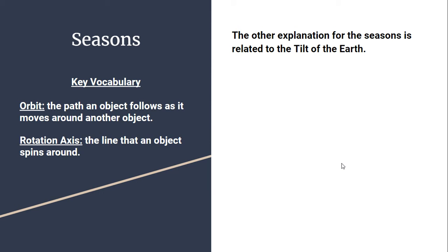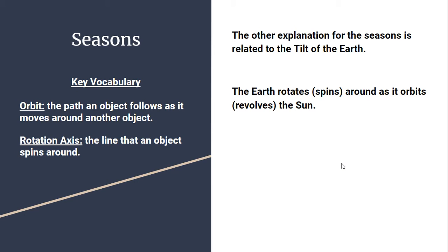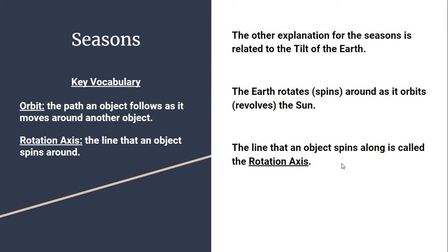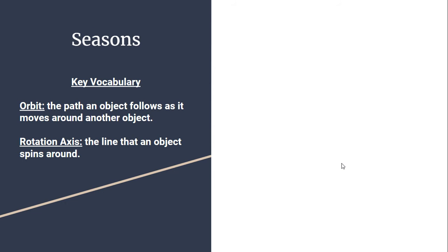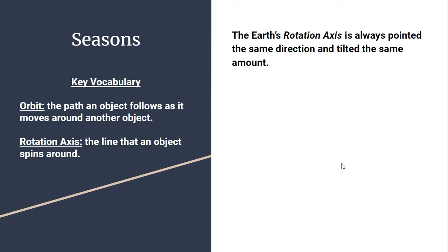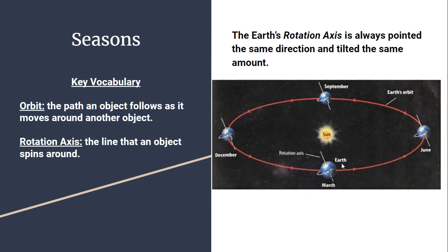Instead, seasons are related to the tilt of our Earth. The Earth spins around like a top as it orbits or revolves around the Sun. That line we're spinning around is called the rotation axis — it shows up in your key vocabulary and is defined as the line that an object spins around. The Earth's rotation axis is tilted; it's not straight up and down in comparison to our orbit. Instead, it's angled along our orbit, and it's always pointed in the same direction.